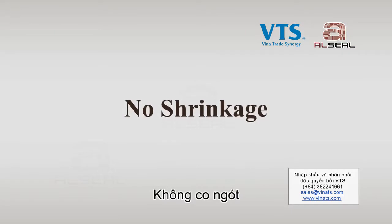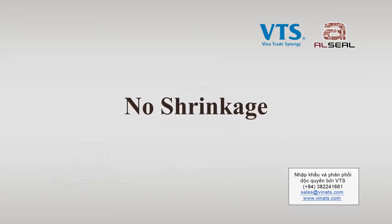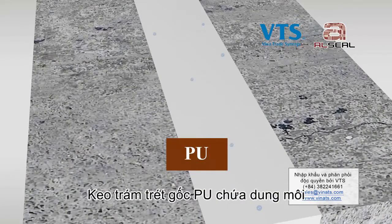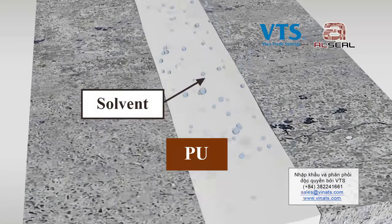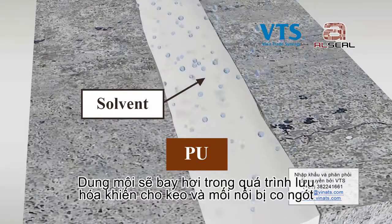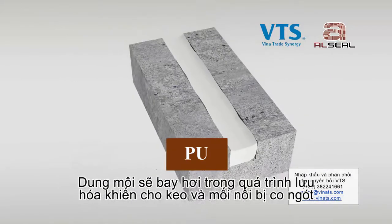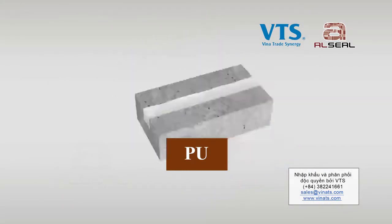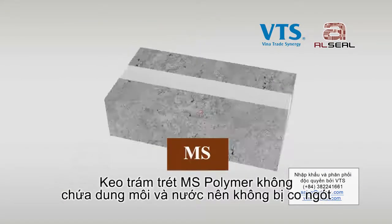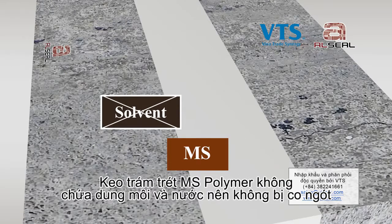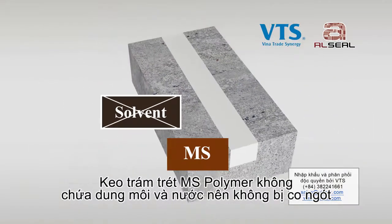No Shrinkage. Polyurethane sealant contains solvent, which will evaporate during the curing process, causing sealant shrinkage and recessed joint. MS Polymer Sealant does not contain solvent or water, and hence, no shrinkage.